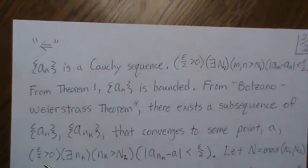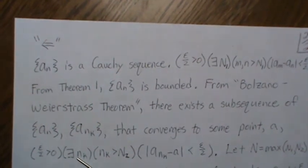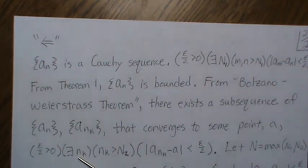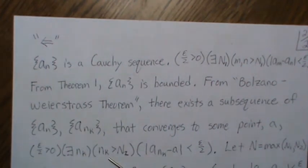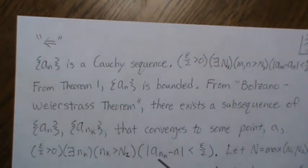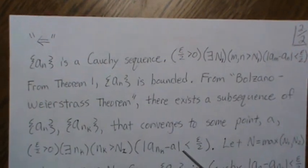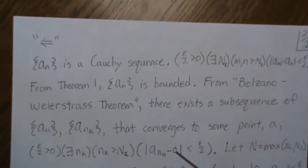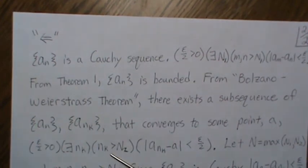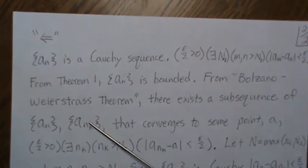So that means there exists an epsilon over 2 greater than 0, such that there exists, that should be an N_2, such that n_k is greater than N_2, such that this inequality holds. So this is the definition of a limit. And we're using the subsequence, right? Because based on the Bolzano-Weierstrass theorem, we know that it converges to some point A.